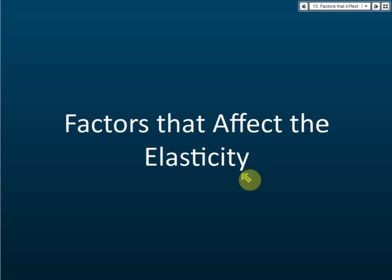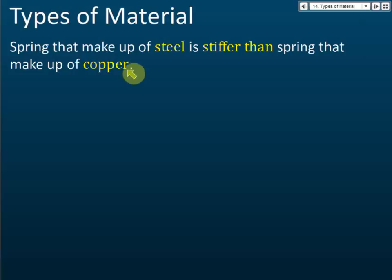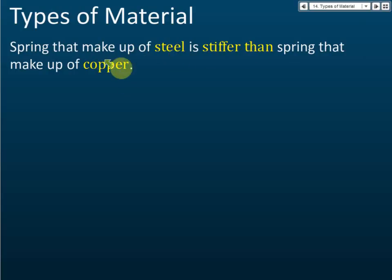Now, factors that affect elasticity. The first is the type of material — they will usually ask you to compare steel with copper. They won't give you nickel or other substances; they will ask you to compare springs made of steel and copper. The spring made of steel is stiffer than the spring made of copper.